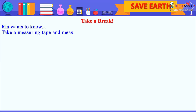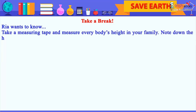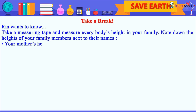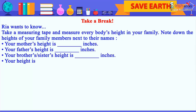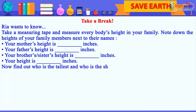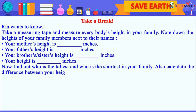Take a measuring tape and measure everybody's height in your family. Note down the heights of your family members next to their names: your mother's height in inches, your father's height in inches, your brother's or sister's height in inches, and your own height in inches. Now find out who is the tallest and who is the shortest in your family. Also calculate the difference between your height and your parents' heights.